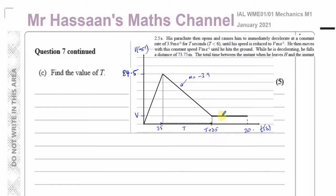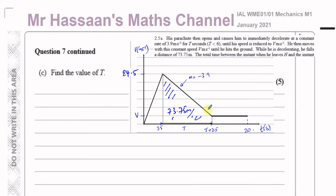Part C: Find the value of T, which is the time for which he was decelerating between when the parachute opened until he reached his constant speed. We know during this deceleration he's fallen 73.75 meters, so the area of this trapezium is 73.75 meters. We also know the rate of deceleration is 3.9 meters per second squared, so the gradient of this line is minus 3.9. These two pieces of information should help us find T.